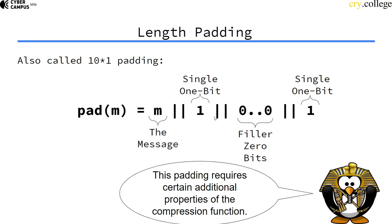With 10* padding you fill with one bit, then zero bits, and then another one bit. Of course, this must always be appended — not just when the message is not a multiple of the block length, but always — and it can only be used if certain additional properties of the underlying hash function are fulfilled.